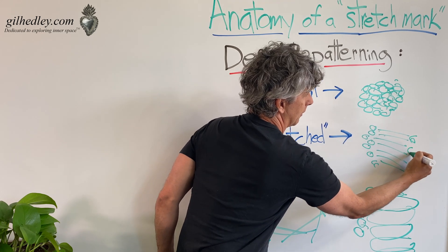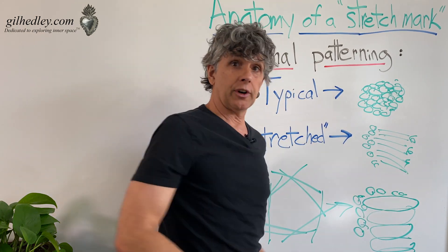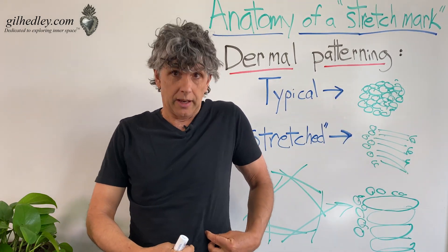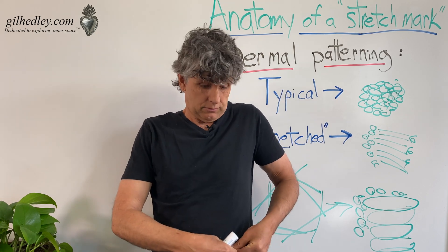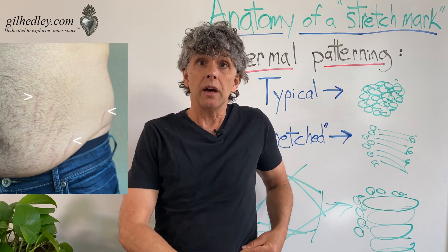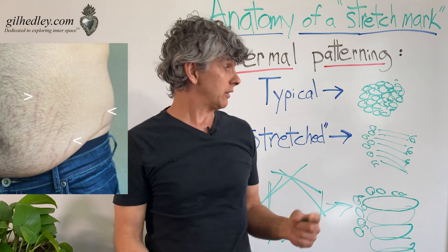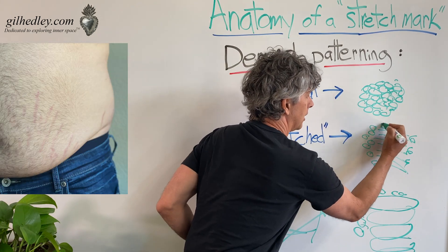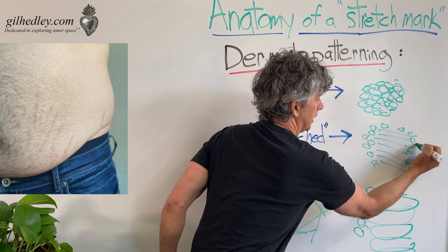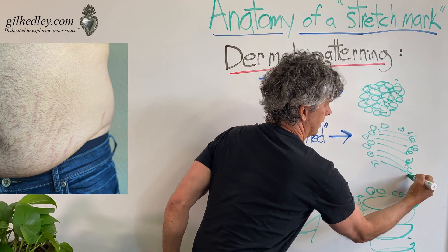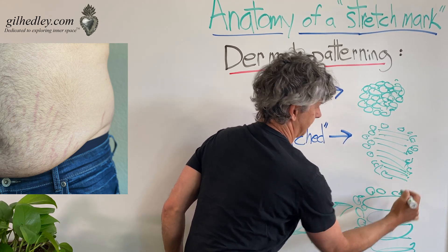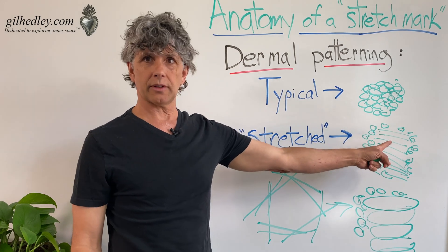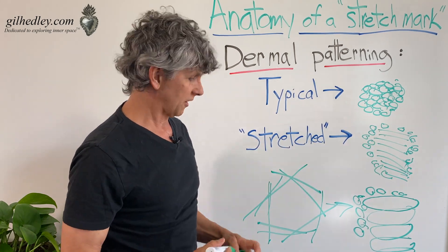When we look on the surface of the skin, we see that it ends up looking like a streak running down. But if you put it under the microscope, what we see is the blown-out circles alongside smaller, normal ones.